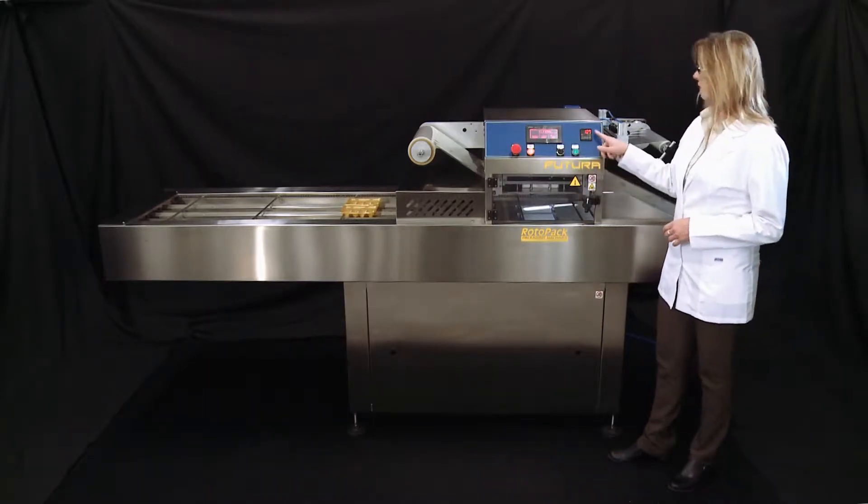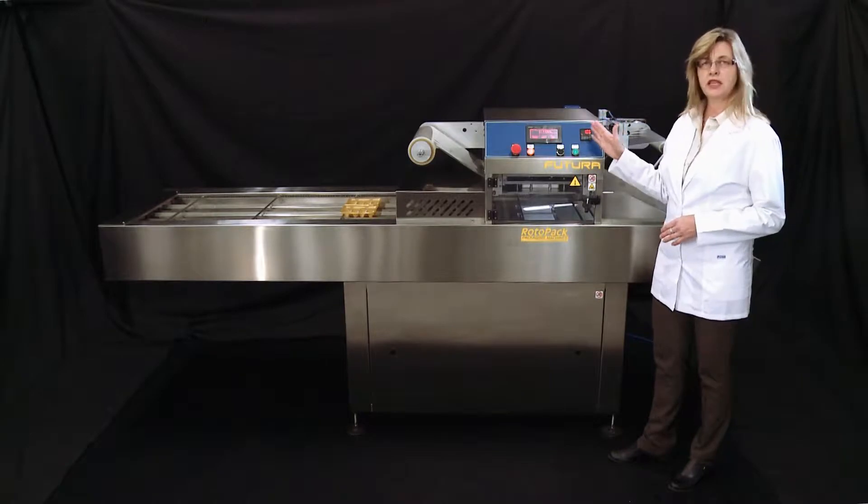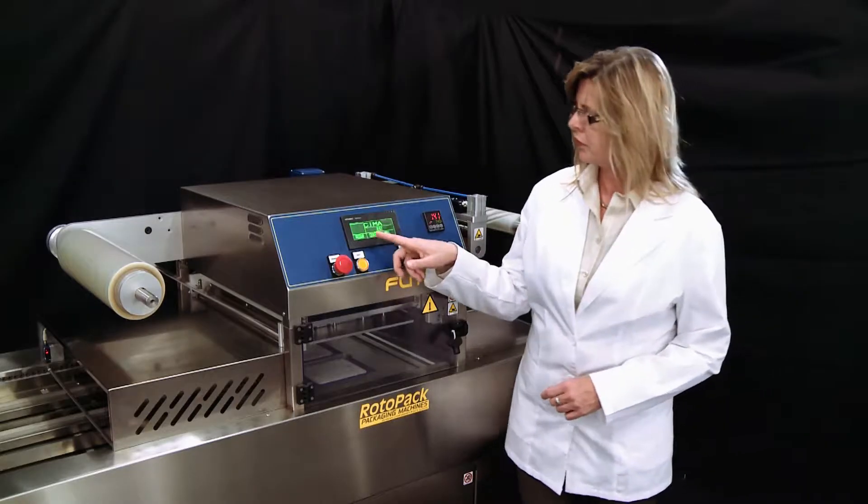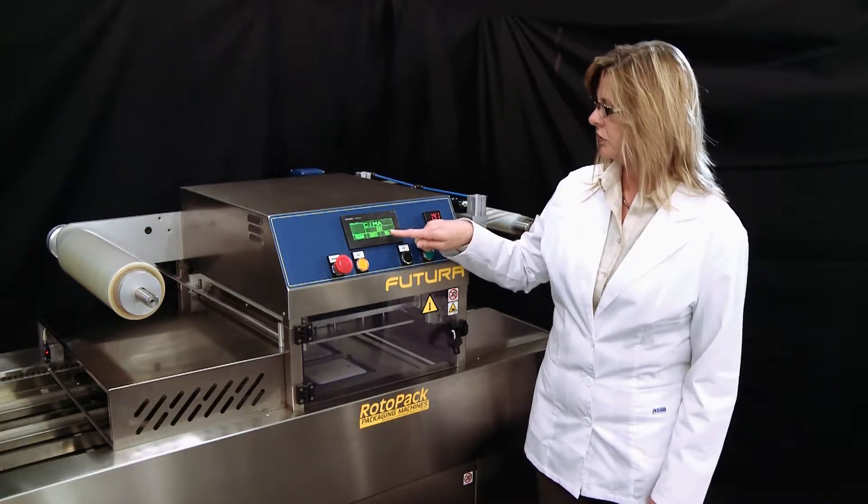A couple of adjustments here. First of all, you're going to set your temperature. The temperature is related to the tray and the film. We have the programming here. This is set to SimaPak's menu. We can set it to Sima.